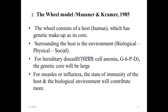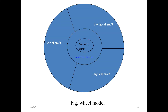The wheel model approach observes about genetic makeup as its own core, with surrounding host environment — biological, physical, and social — as factors for the genetic core. For hereditary diseases like sickle cell anemia and glucose-6-phosphate deficiency, this genetic core is enlarged. For diseases like measles and influenza, the state of immunity of the host and the biological environment contribute more.